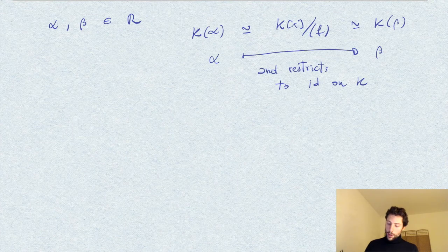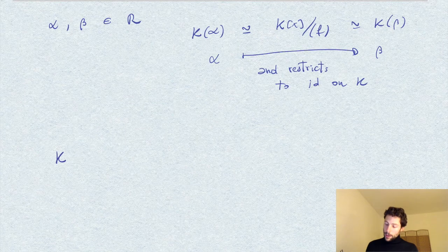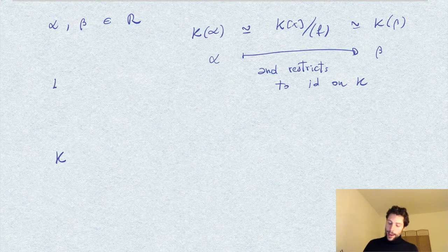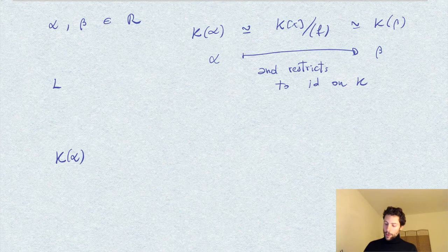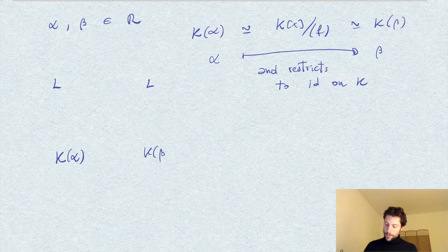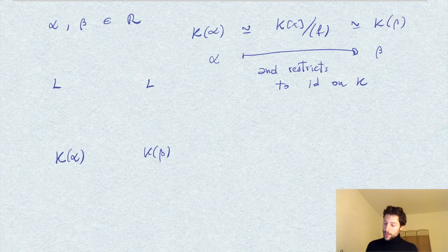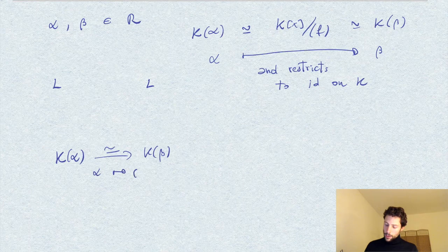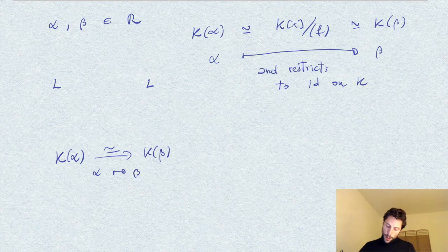Going back to our diagram, in this case we consider L, our L here, as an extension over K(α) and over K(β). So what we have is this map here which is an isomorphism that sends α to β.